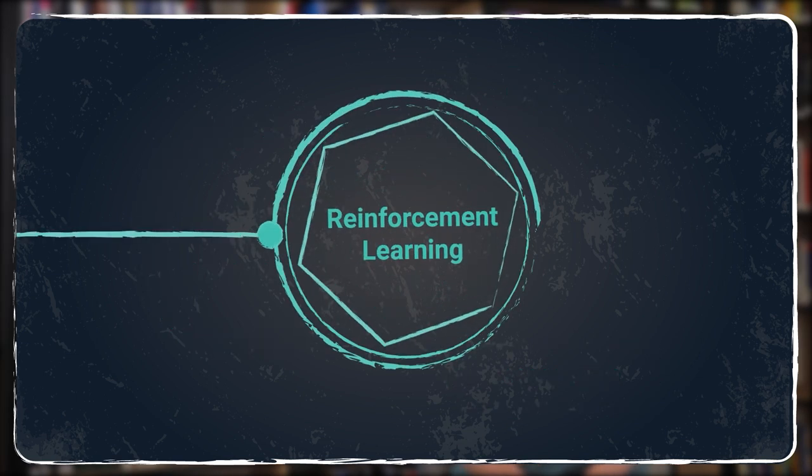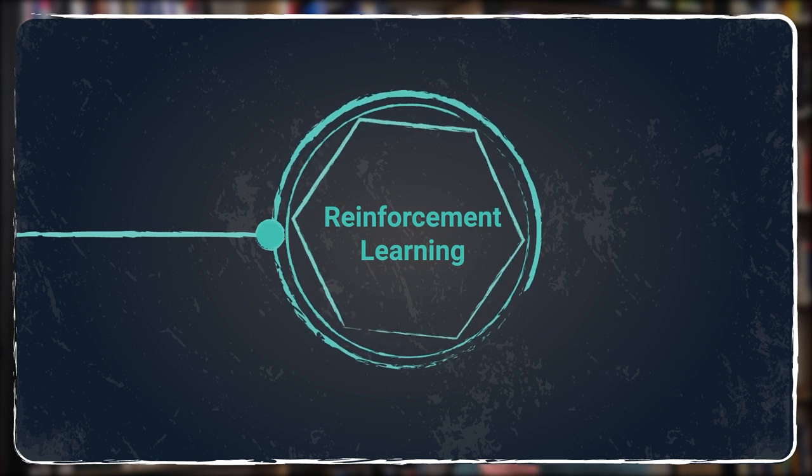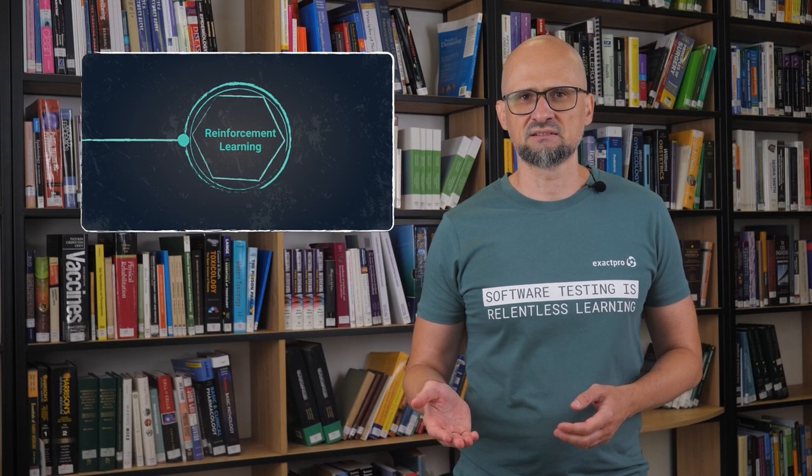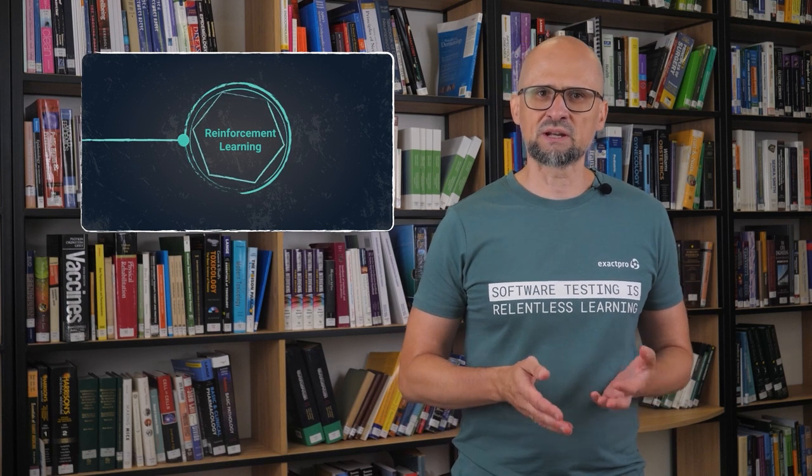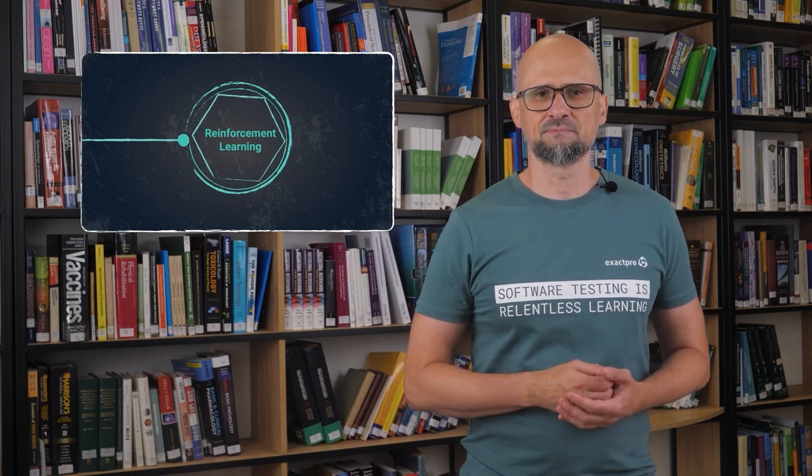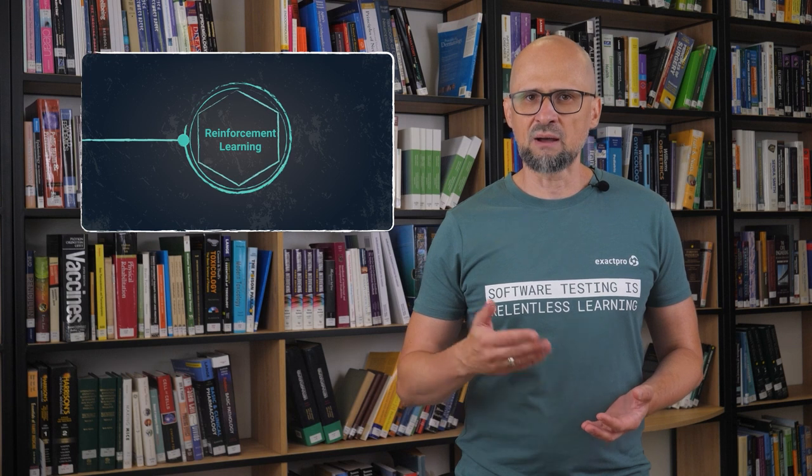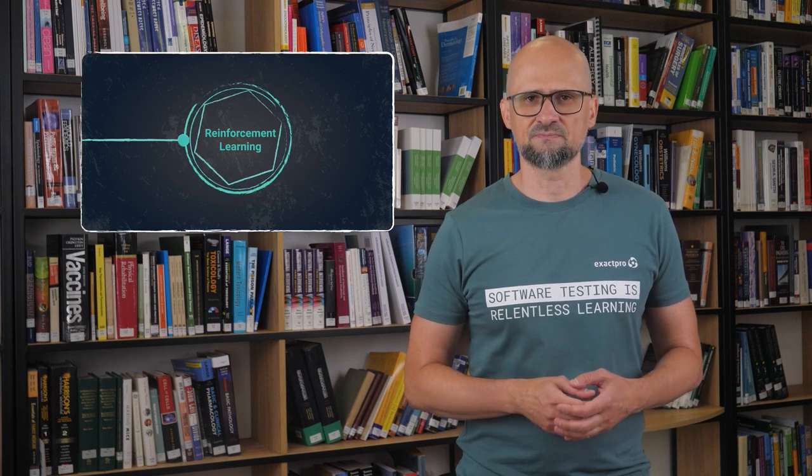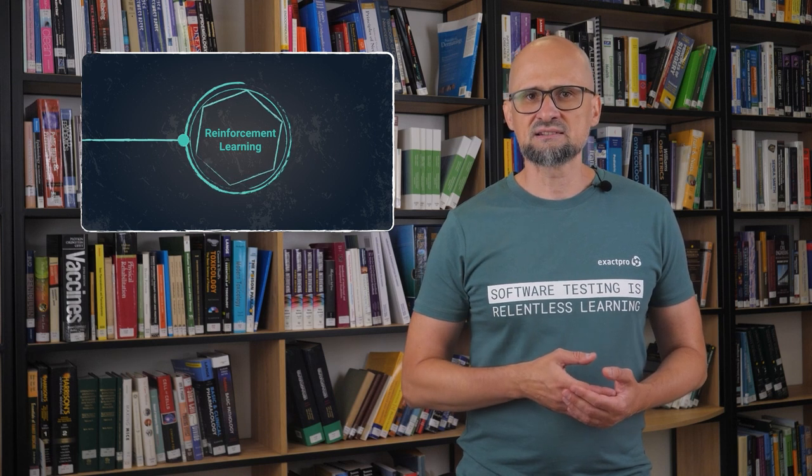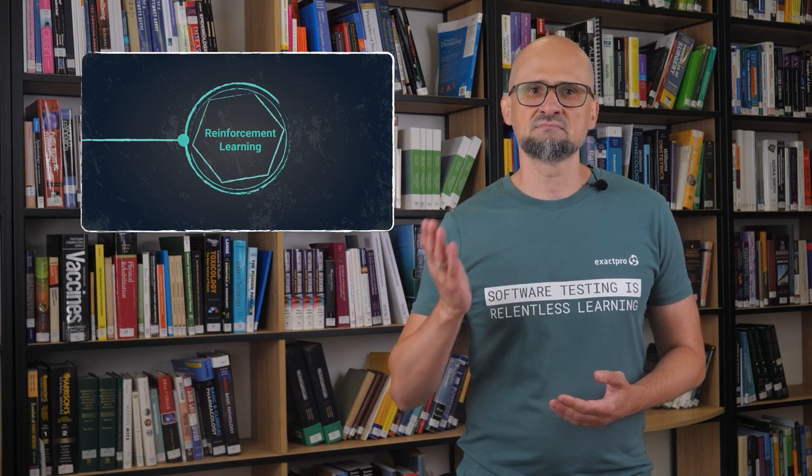The last one is reinforcement learning, which is an approach where a system learns by interacting with the environment in an iterative manner. There is no training data. The agent is rewarded when it makes a correct decision and penalized when it makes an incorrect one. Robotics and autonomous vehicles are examples of applications that use this approach. This approach can be implemented using Markov algorithms, dynamic programming, and other more sophisticated algorithms.